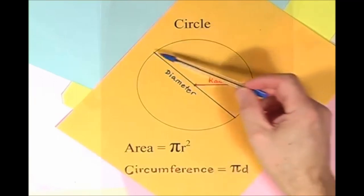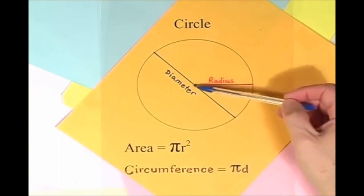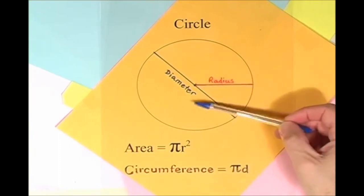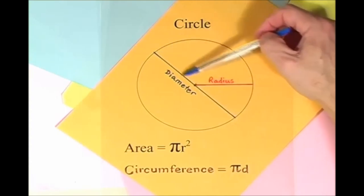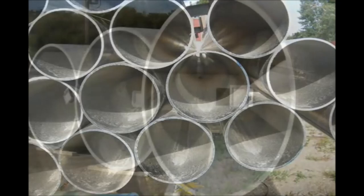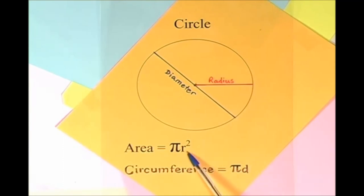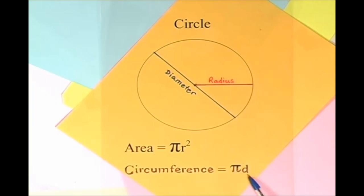Here is a circle, it knows how to get around. It has a radius from center to rim. And its diameter's a line that goes from side to side while passing through the center, now isn't that simple. Pi r squared sounds like area to me, when I need a circumference, I'll just use pi d.